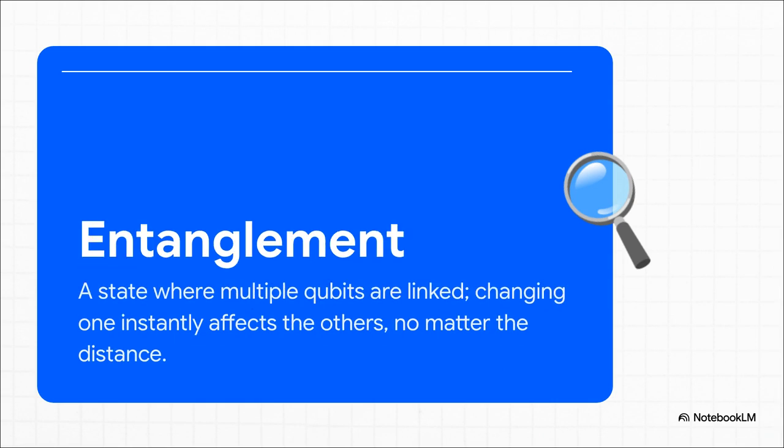Superpower number two is entanglement, and this is where things get really weird and really powerful. You can link two or more qubits together so that their fates are completely intertwined. If you measure one and find out it's zero, you instantly know its entangled partner is a one. It doesn't matter if it's a millimeter away or across the galaxy. This deep, kind of spooky connection lets qubits perform these complex coordinated calculations that are just flat-out impossible for classical bits.